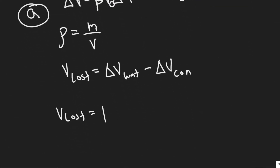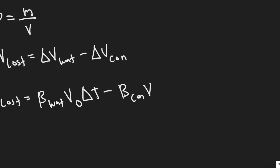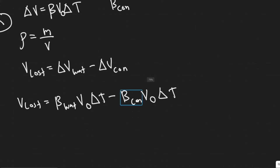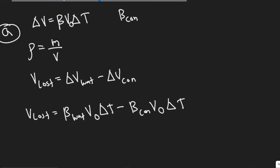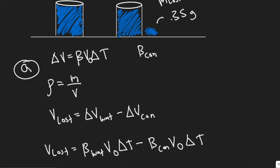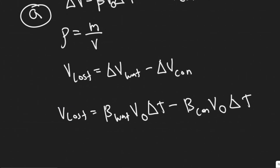So this tells us the volume lost equals — rewriting using the expansion formulas — the beta of water multiplied by the initial volume of the water multiplied by delta T, minus beta of the container times the initial volume times delta T. We can find every variable except beta for the container, so we can actually solve for it.